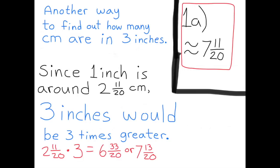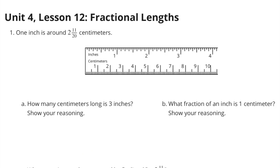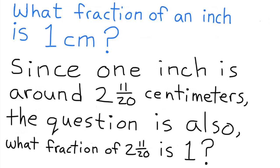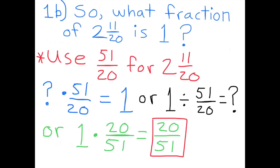There are just about seven and thirteen-twentieths centimeters in three inches. Part b: what fraction of an inch is one centimeter? Show your reasoning. Since one inch is around two and eleven-twentieths centimeters, the question is also: what fraction of two and eleven-twentieths is one?